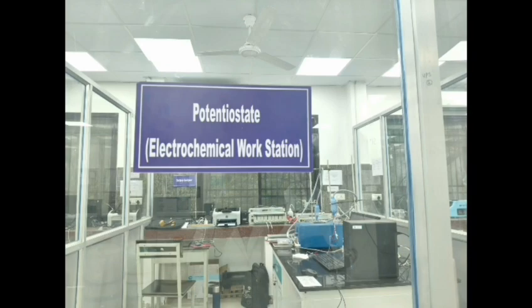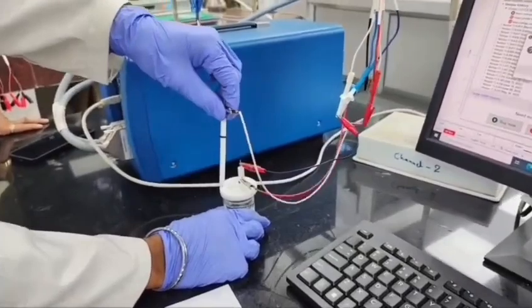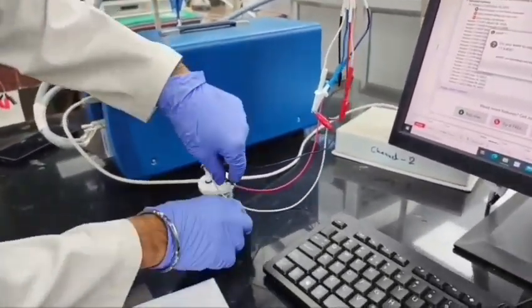Now let us move to take the reading from cyclic voltammetry. There are three electrodes: first is the reference electrode, second is the working electrode, and third is the counter electrode.